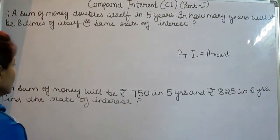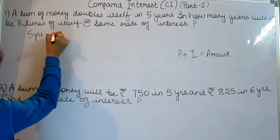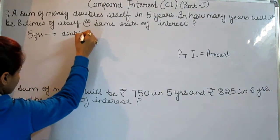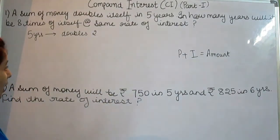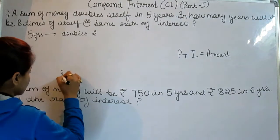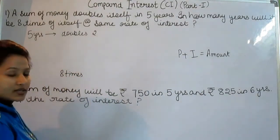A sum of money doubles itself in 5 years. In 5 years a sum of money doubles, doubles means 2. In how many years will it be 8 times? 8 times means 8.